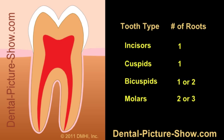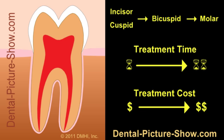Here on DentalPictureShow.com, we have a chart that lists the number of roots and root canals different types of teeth usually have. The reason this might be of interest to you is because the amount of time it takes your dentist to complete your treatment, as well as the fee they charge, are both to a great degree based on the total number of canals they are treating.